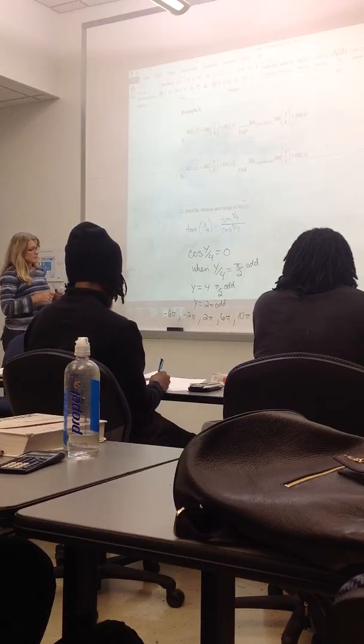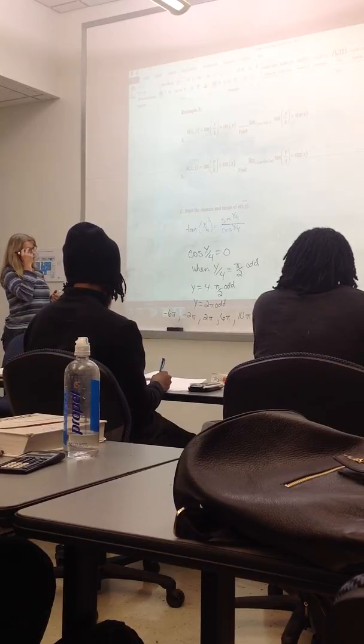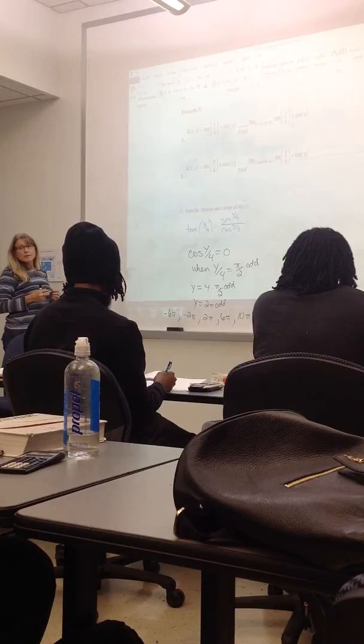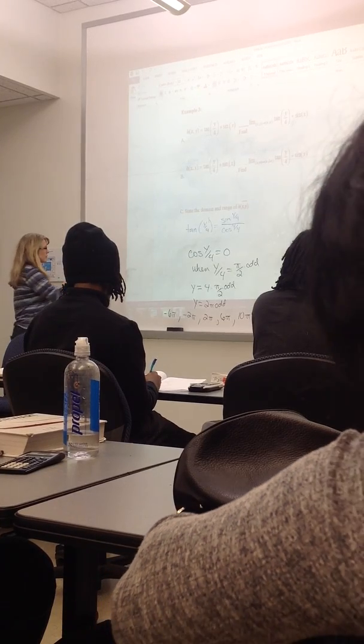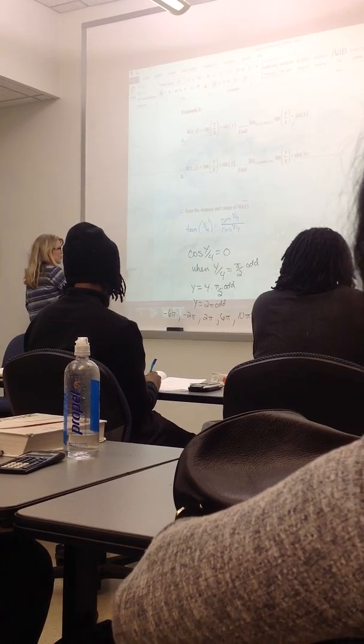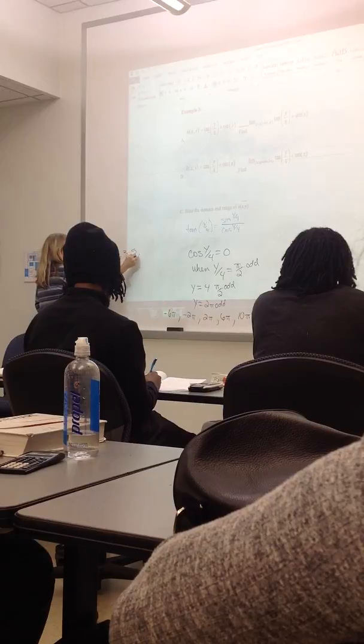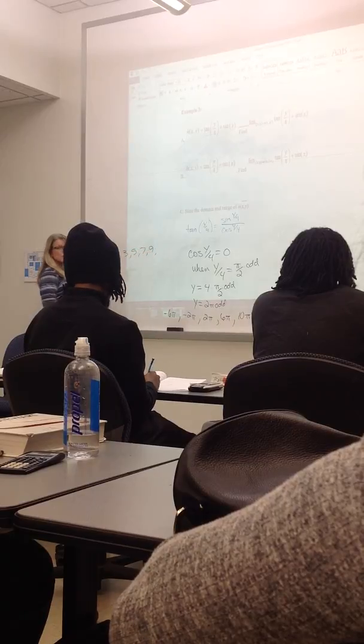What does odd mean? Odd number. Odd number is wrong. I'm sorry, what? What do you mean by odd? Odd numbers are one, three, five, seven, nine. They're not divisible by two.